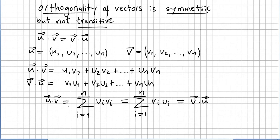If you prefer, in the summation notation, u·v is a summation from i equals 1 to n of ui times vi, but ui and vi are commutative, so this equals v·u. So that concludes the proof.